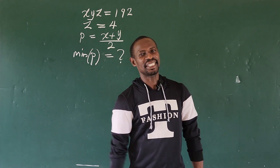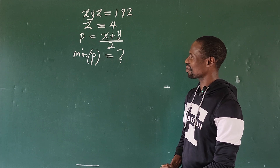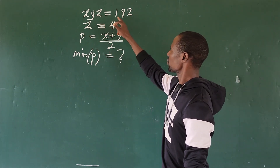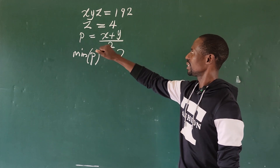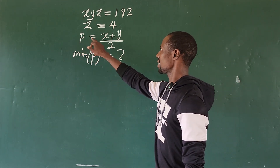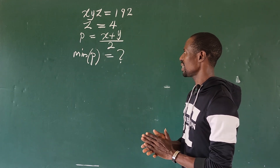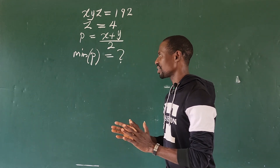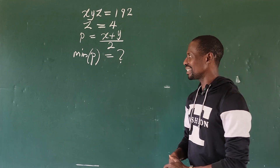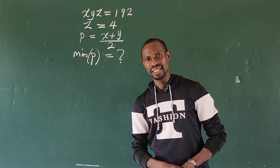Hello, welcome to today's class. Today we have the question: x times y times z equals 1 minus 2z. Z is given to be 4, and p is given to be x plus y all over 2 — in other words, p is the average of x and y. We are asked to find the minimal possible value of p.